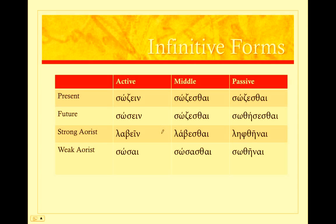Let's do them first by tense. So the present tense of sōdzō, 'to save.' Sōdzein — active. Sōdzesthai — there's your middle infinitive ending. And it's going to be the same as the passive. Remember, the middle and passive in the present tense are identical. So sōdzesthai, sōdzesthai.